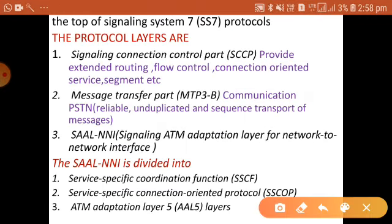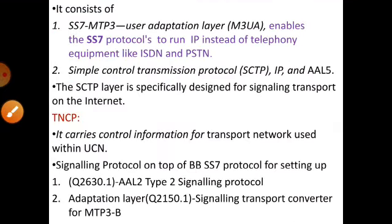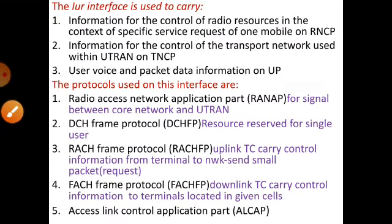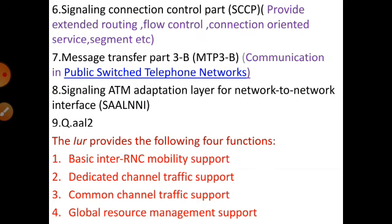These are the three important levels of SAAL-NNI, and the same protocols are also used in the IUR interface. SAAL-NNI — that is Signaling ATM Adaptation Layer for Network-to-Network Interface — is further divided into SSCF, SSCOP, and ATM Adaptation Layer 5. You can refer to the previous video for details. Next we are going to see the important functions performed by the IUR interface.